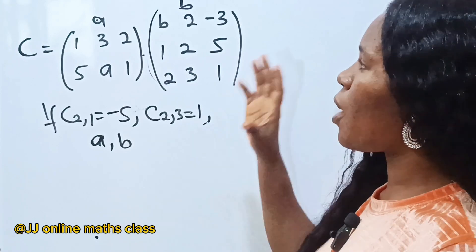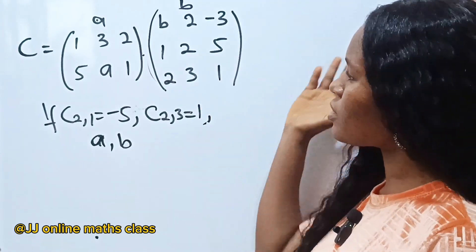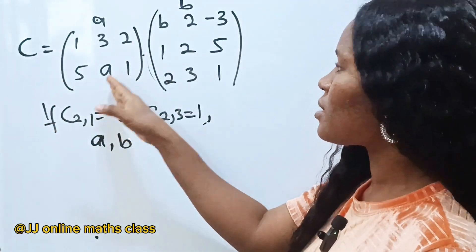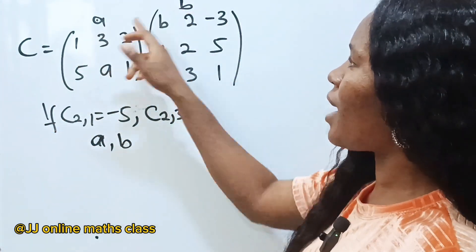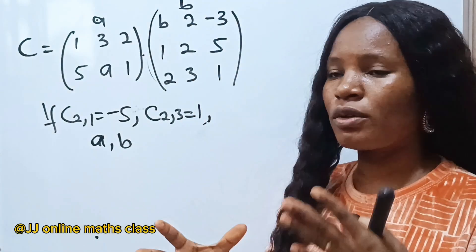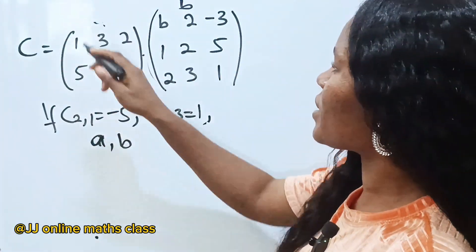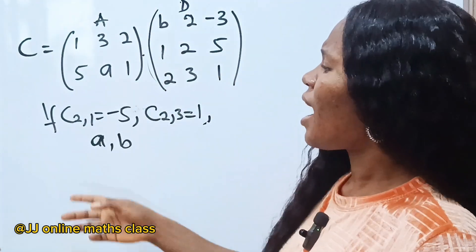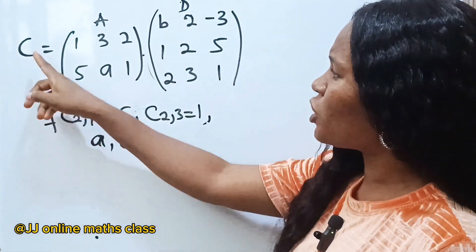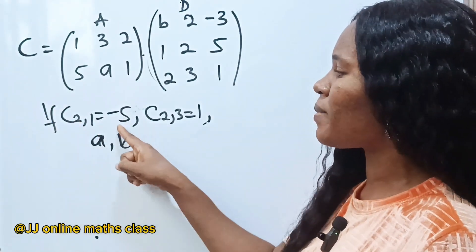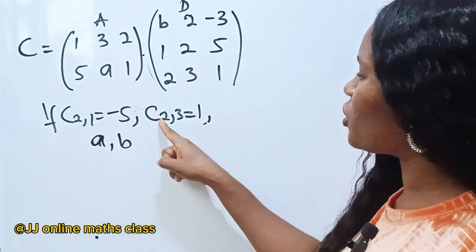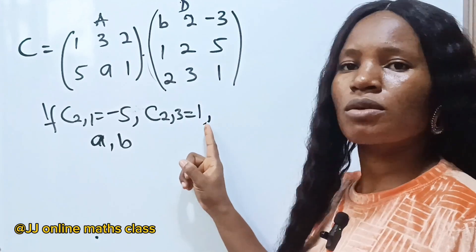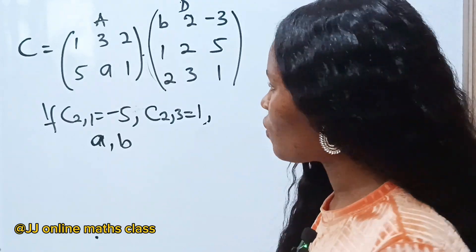Today we have a Math Olympiad question on the board. We are asked to solve for a and b, where matrix C equals matrix A multiplied by matrix B. The element of matrix C occupying the second row and first column is minus five, and the element occupying the second row and third column is one.